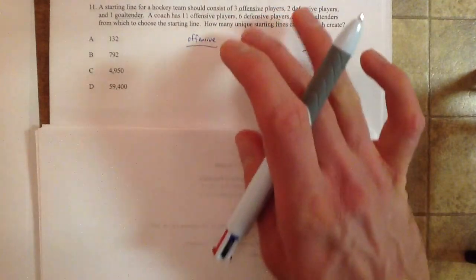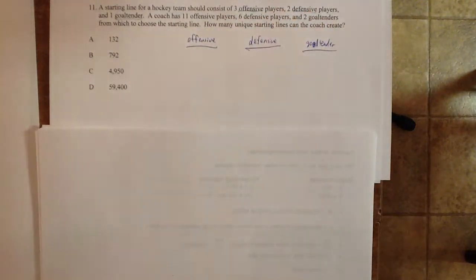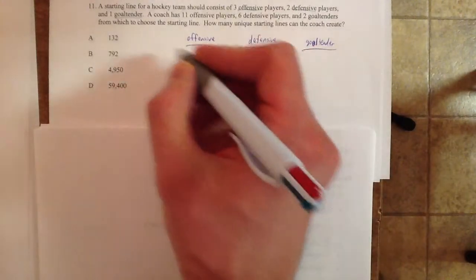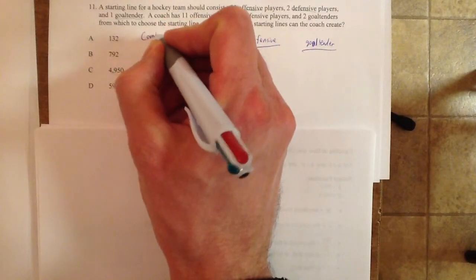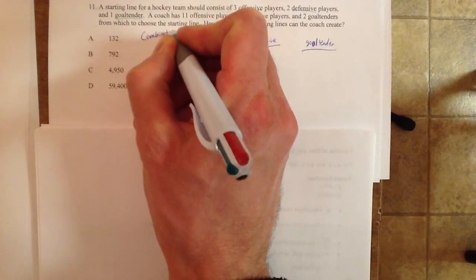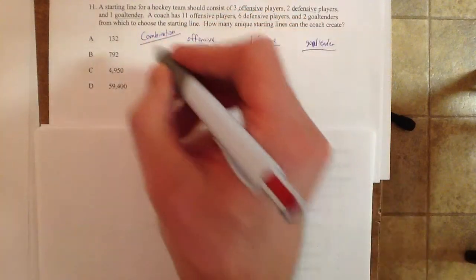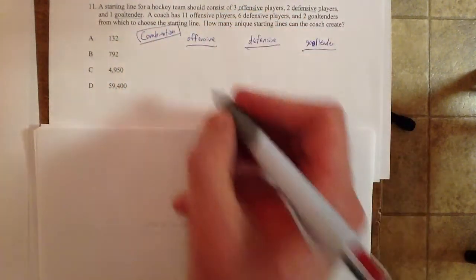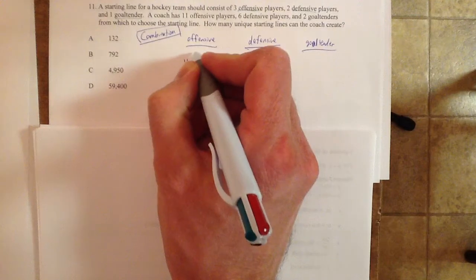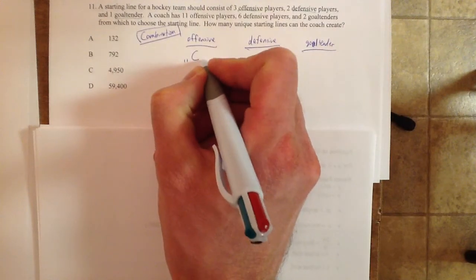Now we're going to have to do this again for defensive and for goaltenders, but we have a big group made smaller and the order doesn't matter. So all of these are going to be combinations. We have 11 offensive players and we want to pick three of them.